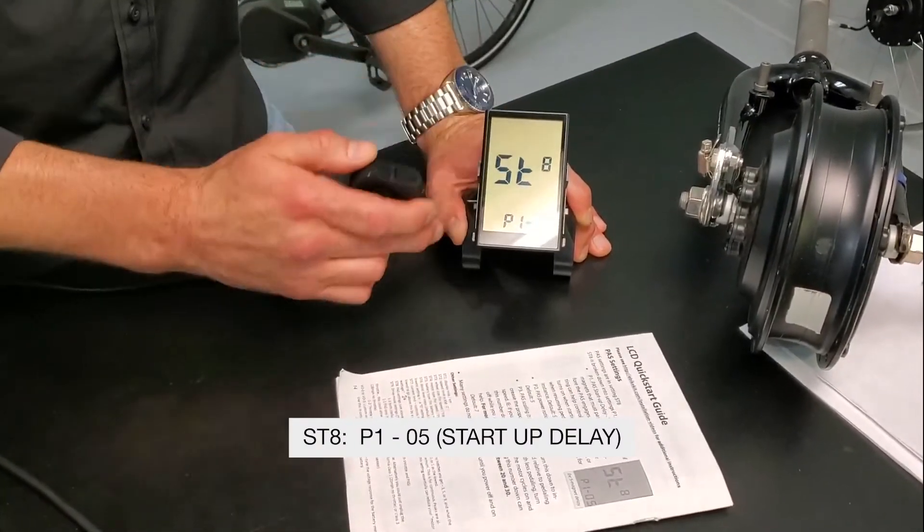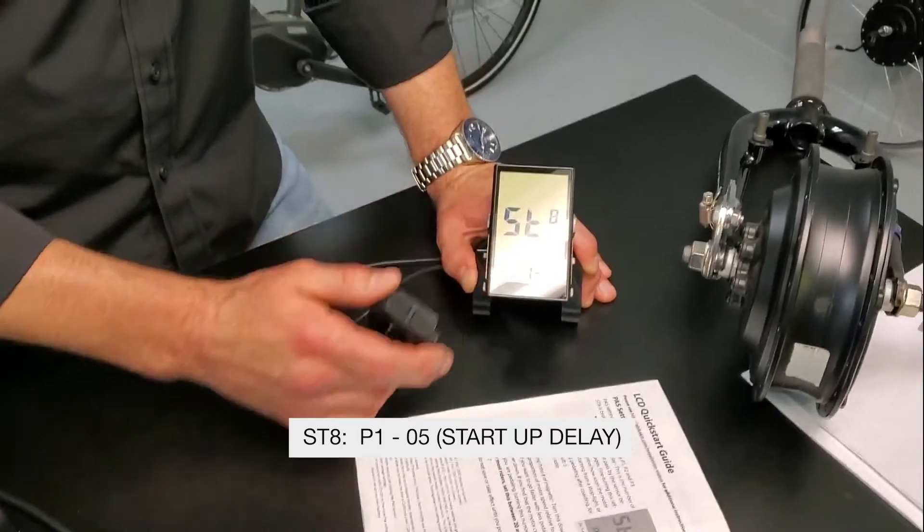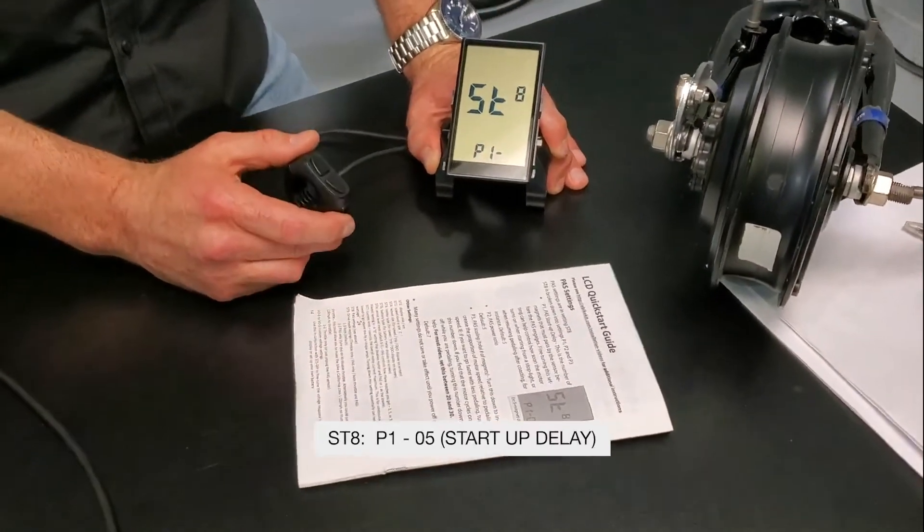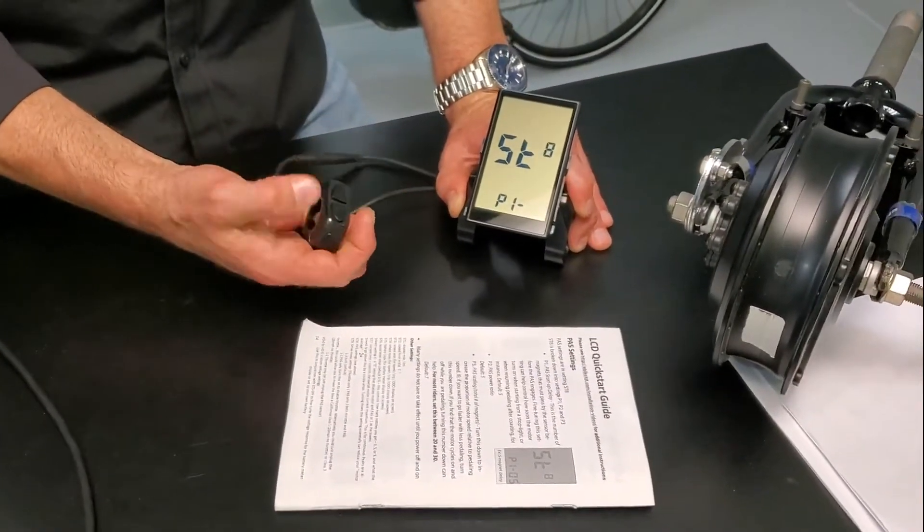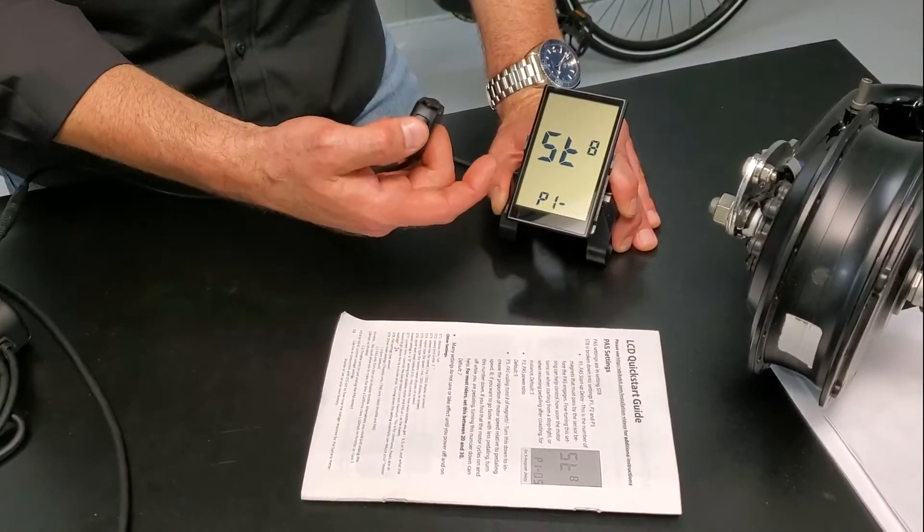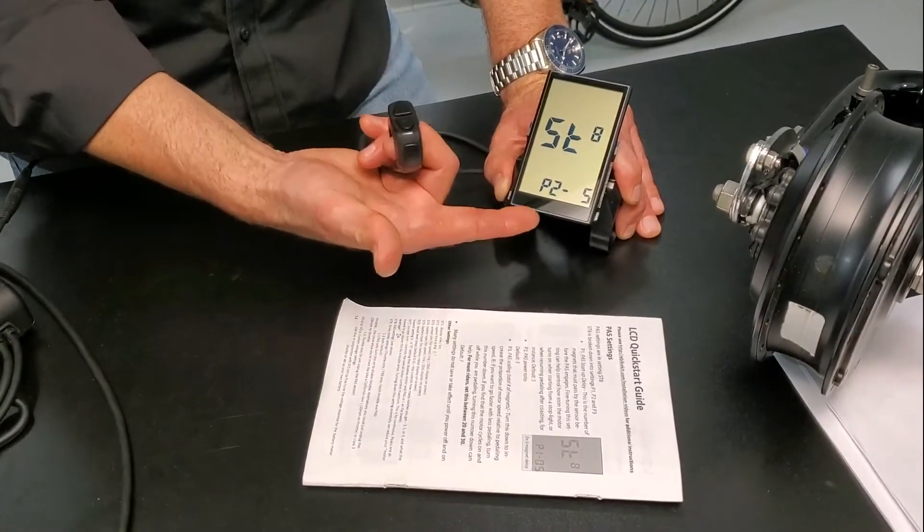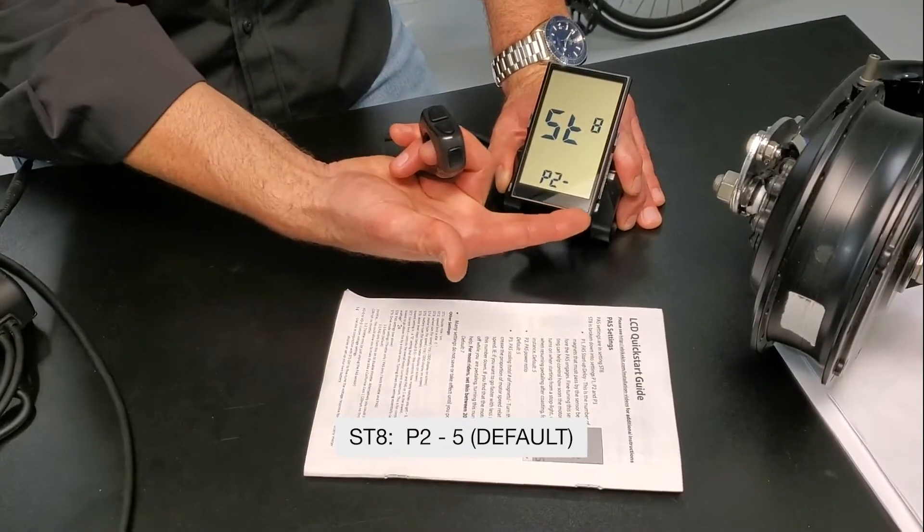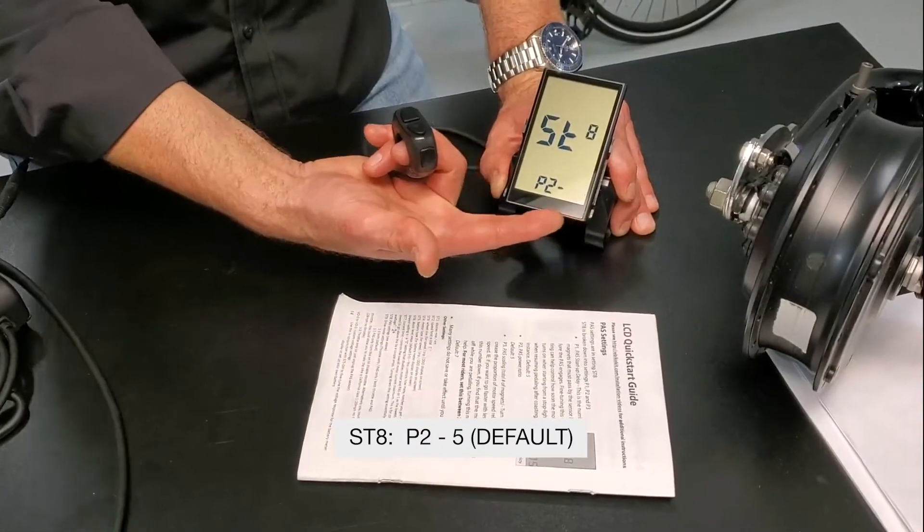So ST8P1-03. This is our startup delay and I want you to put this to 5 for default. And then get to the next setting. We're going to click M, quick press. We're going to get to P2 and it says dash 5, which is the default. I want that on 5.